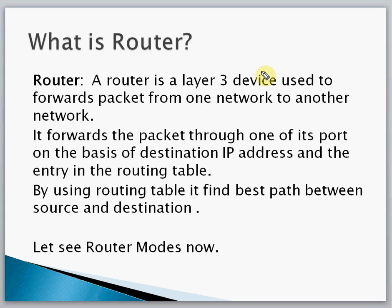I will ask you a question: what is a router? If you know the answer, just try to write it in the comments. I will review and reply to your comments. Now I will give the answer: a router is a device which is used to make communication between two different networks. It is a Layer 3 device used to forward packets from one network to another network.